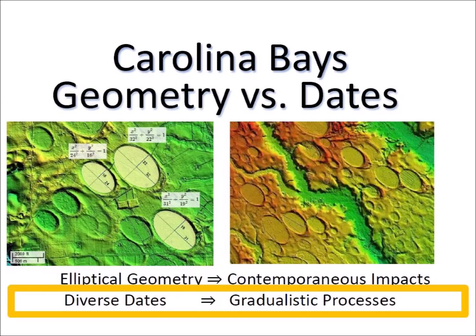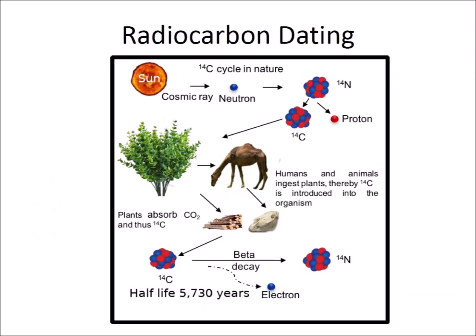This video discusses the evidence for the geometry and for the dates. Radiocarbon dating was developed in the late 1940s for determining the age of an object by using the properties of carbon-14, which is a radioactive isotope of carbon.